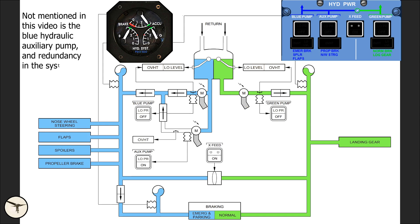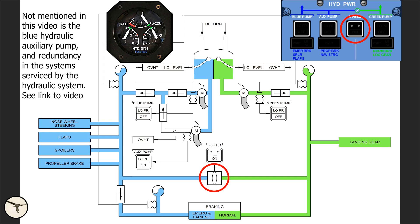Both systems can be supplied by a single pump through a crossfeed. This means that even if one pump has failed, the systems reliant on hydraulic power remain fully functional. However, in such cases, the redundancy of the hydraulic system is reduced. And this is where the minimum equipment list comes into play.